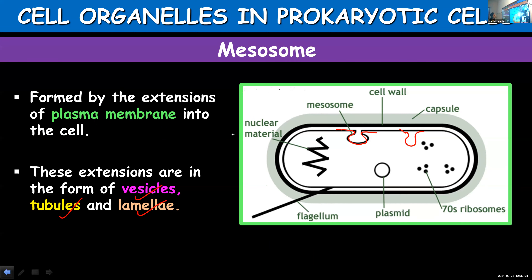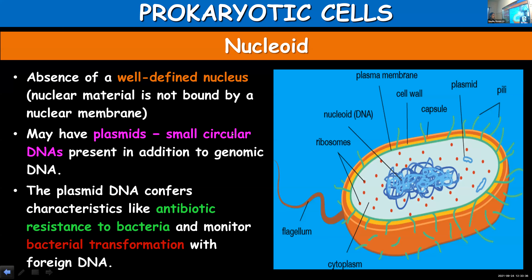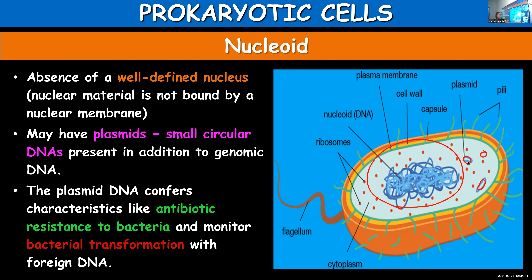Plasmids are circular DNAs along with the chromosomal DNA in prokaryotic cells. The main genomic DNA is present in the nucleoid region. Apart from that, circular DNAs — plasmids — are scattered in the cytoplasm. The presence of plasmids can provide antibiotic resistance and also help in monitoring the transformation of bacteria with foreign DNA.